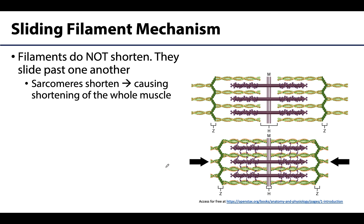Skeletal muscle shortens during contraction because the thick and thin filaments slide past one another. In a more relaxed muscle, the thin filament does not completely overlap with the thick filament, but with contraction the thin filament overlaps completely with the thick. It is not the myofilaments themselves that are shortening — they remain the same size — it is entirely about how much overlap there is. Myofilaments slide, causing the sarcomere to shorten, and the linkage of sarcomeres shortening in a row leads to shortening of the whole muscle.